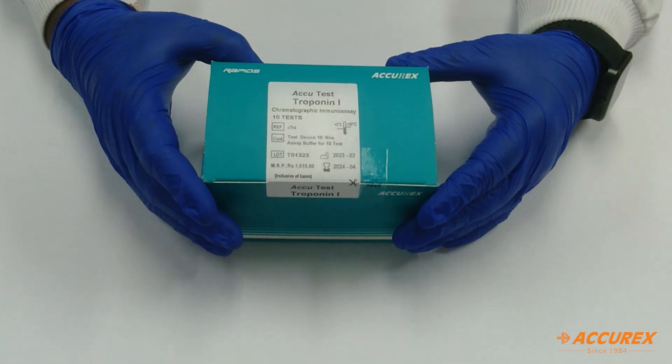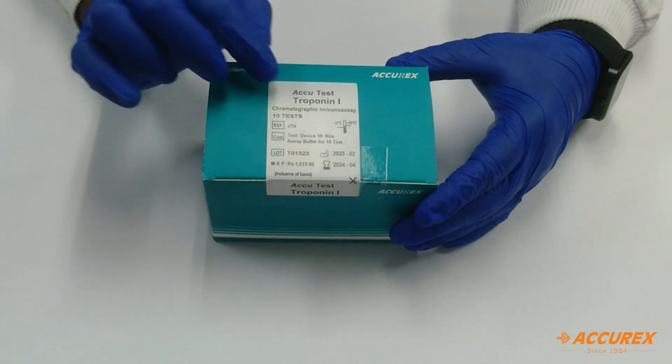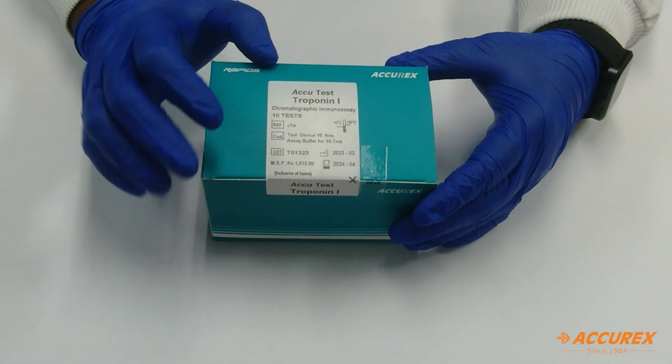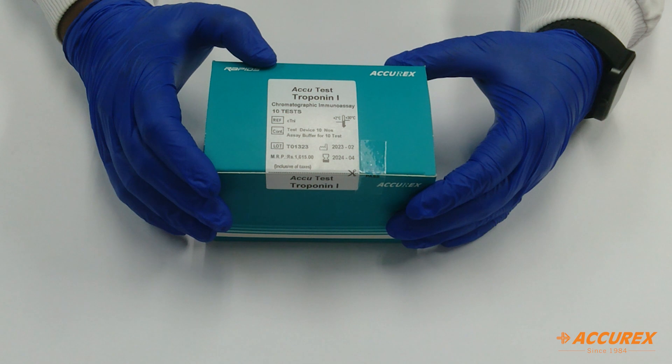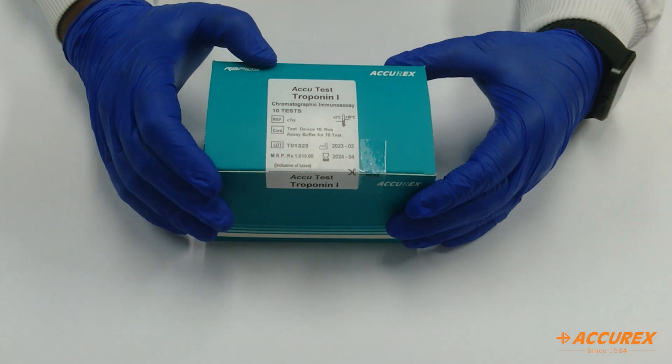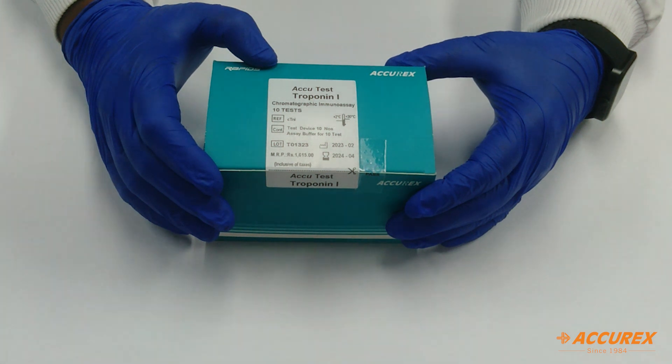Hello everyone, welcome to Accurex YouTube channel. Today we have brought a product called Accurex Troponin I. It is a rapid chromatography immunoassay method for the qualitative detection of human cardiac troponin I in whole blood, serum and plasma. It is an aid for diagnosis of myocardial infarction in the human body.